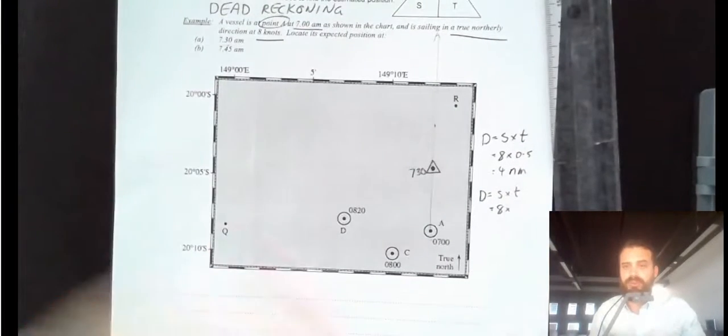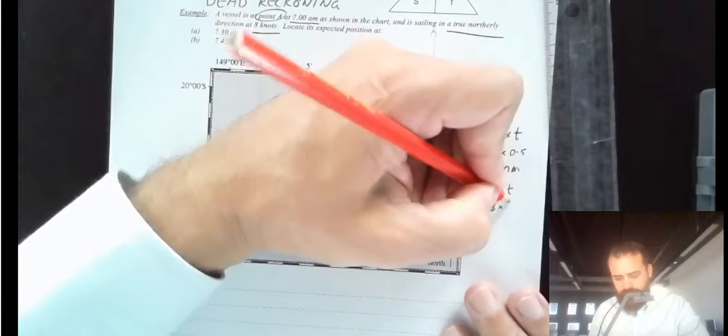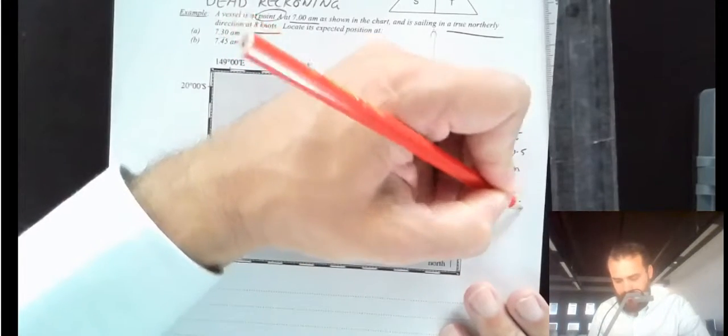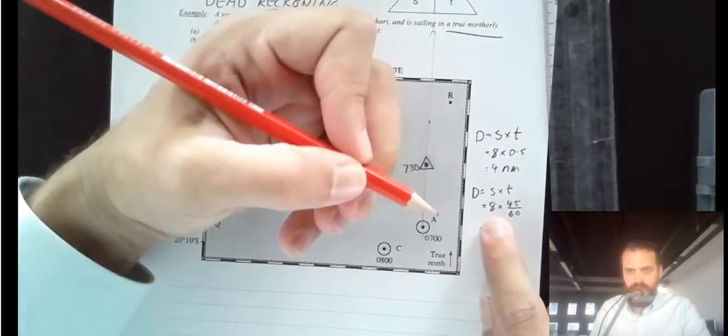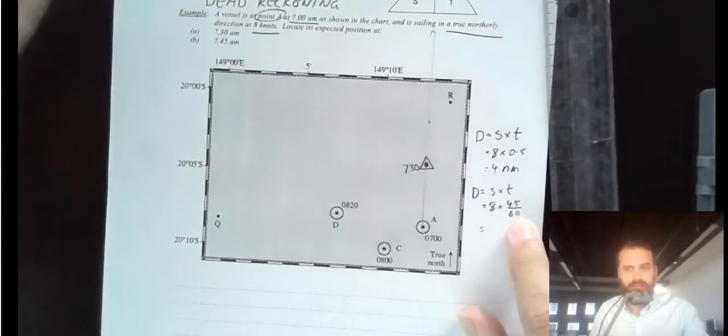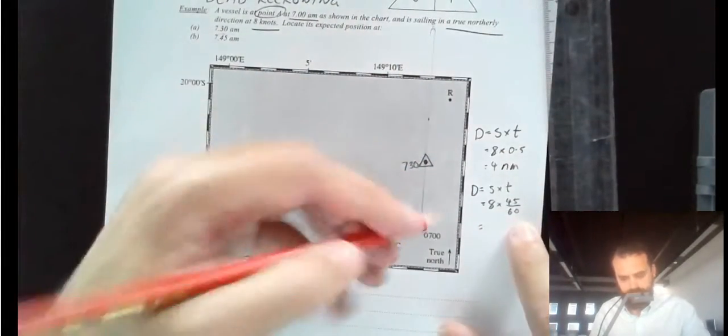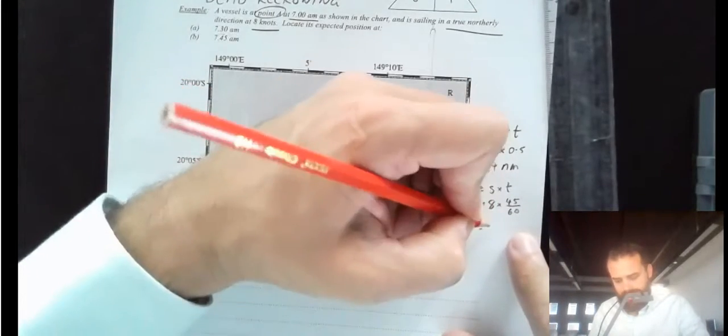Now if you're having trouble with converting that into hours, you just do however many minutes divided by 60. 8 times 45 over 60. So of course, 20 minutes, you do 20 over 60. Now when I put that into my calculator, I'll get 6 nautical miles.